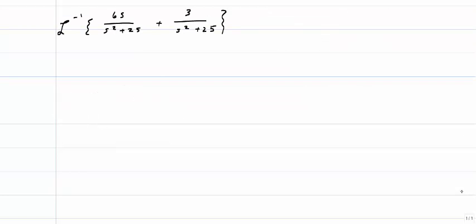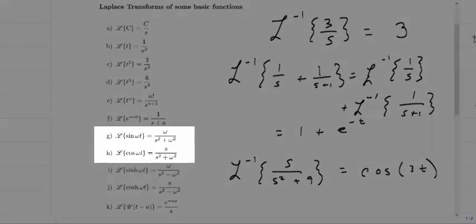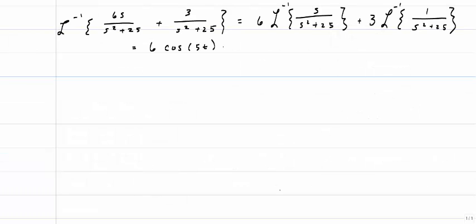Let's look at another example. I'll use linearity to split the expression and pull out the 6 and the 3. Looking at the table — these tables will be given to you on exams — the first term looks like a cosine. A cosine Laplace transform equals s over s² + omega². If omega² is 25, omega is 5, so the first term is 6 cosine 5t. The second term is more of a hassle because cosine has s in the numerator while sine has omega in the numerator.